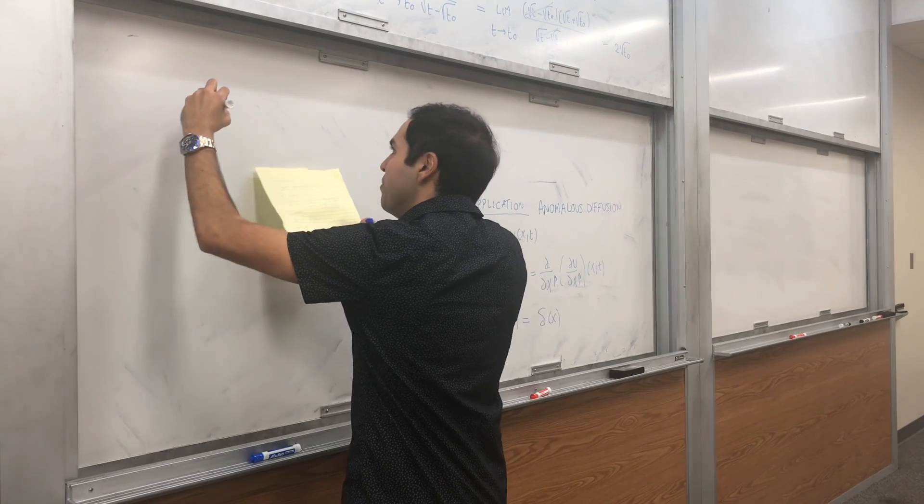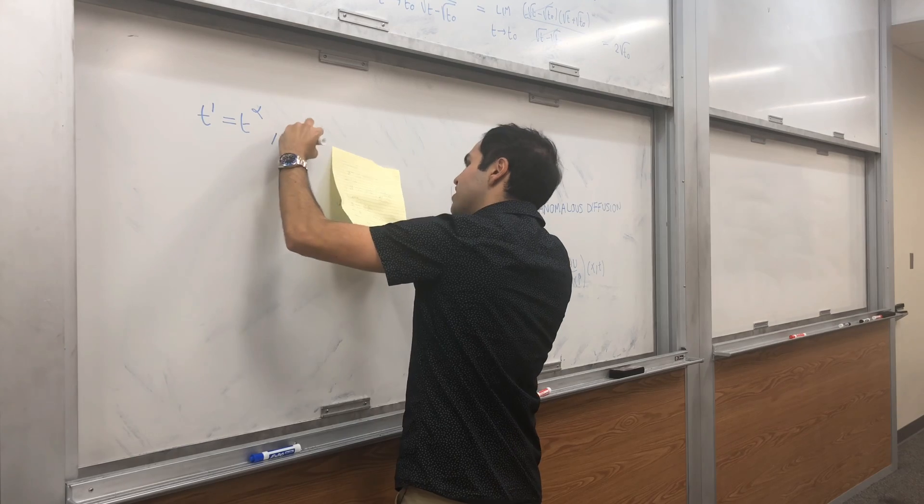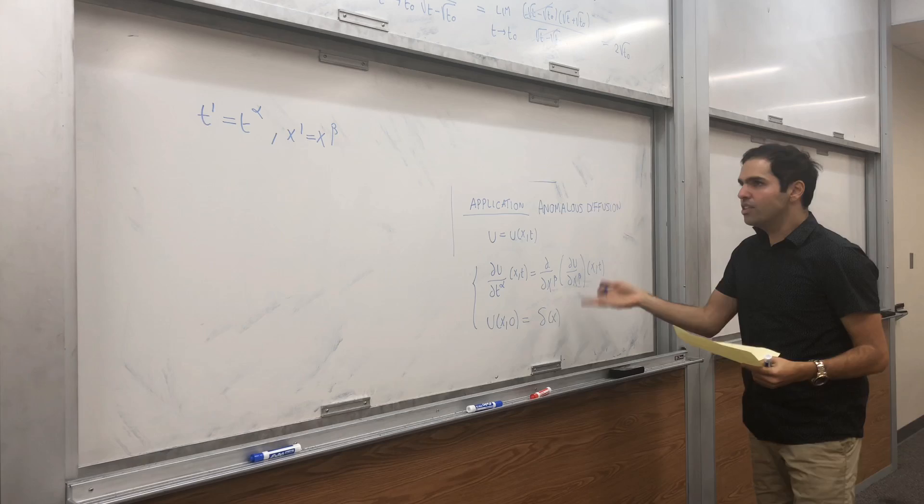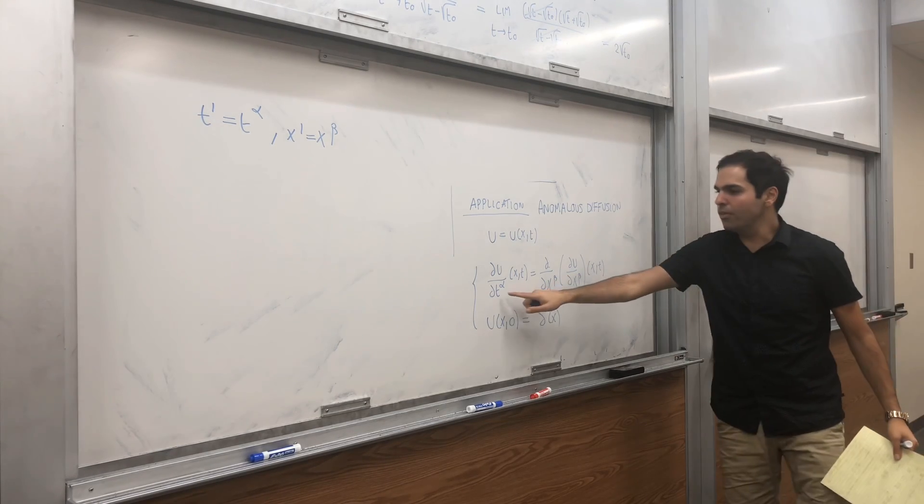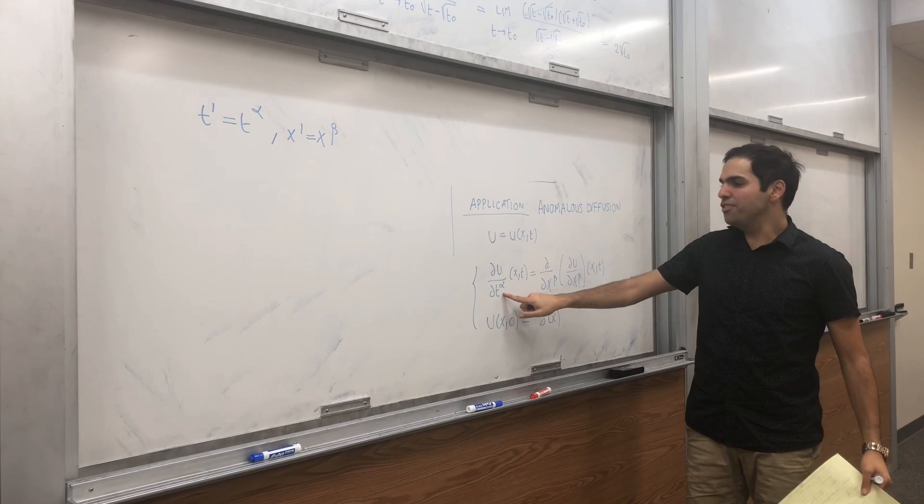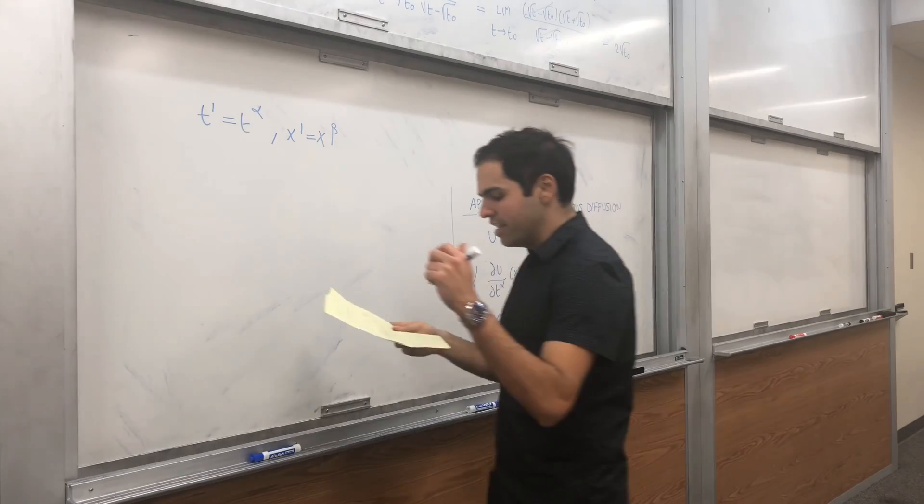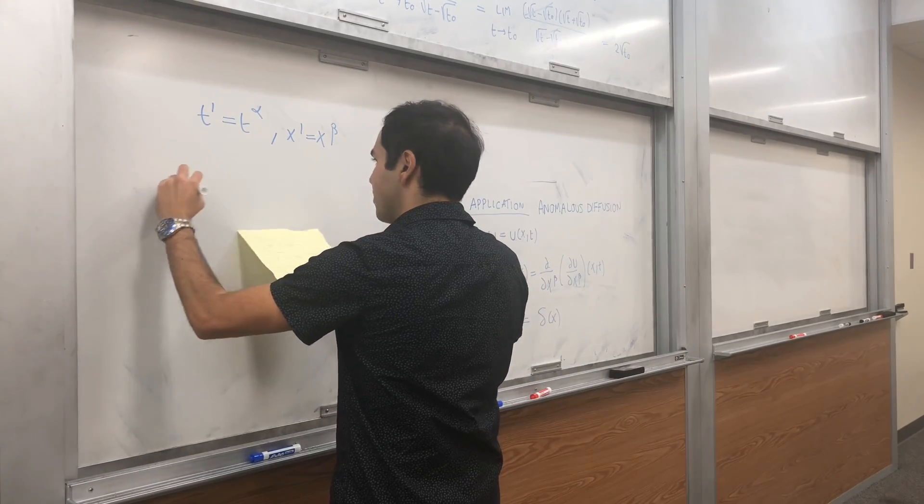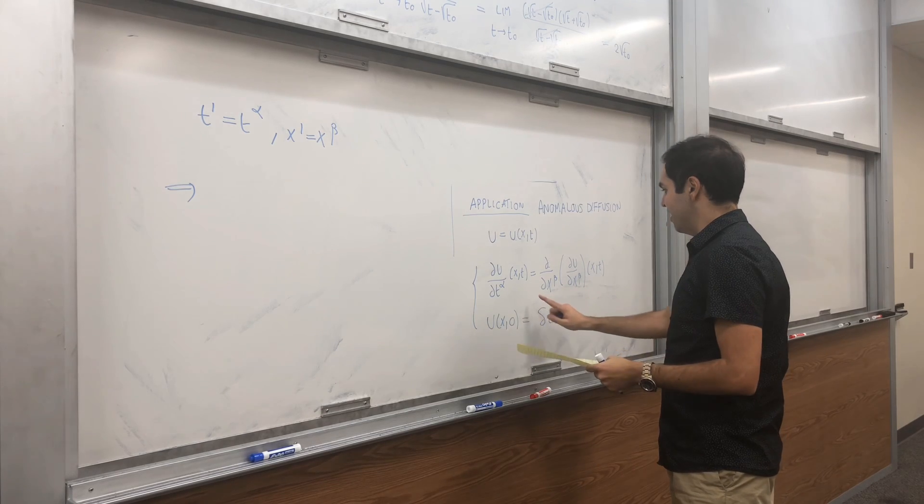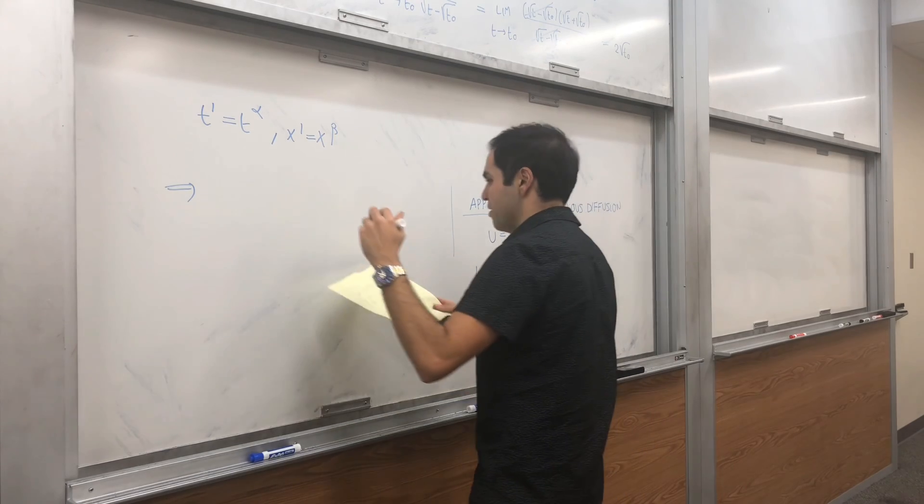So, let's just, t prime equals t alpha, and x prime equals x beta. Now, it turns out, if you do that, well, t alpha just becomes t prime, and if you use the definition, it indeed becomes the t prime derivative of u equals two times the x prime derivative of u.